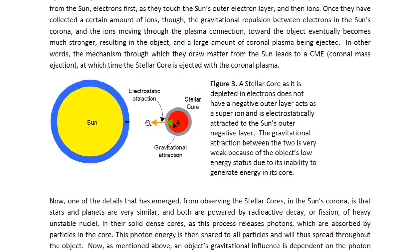And the fact that it is the electrostatic attraction that brings stellar cores to the sun is illustrated here. Basically, they have a positively charged inner core. They don't have a negative outer layer because they are depleted in electrons. So, this positive core is attracted to the sun's outer negative layer and the electrostatic attraction, which is illustrated by this orange arrow, is much, much larger than any gravitational attraction that the object may feel towards the sun. And this is because of its low energy status.